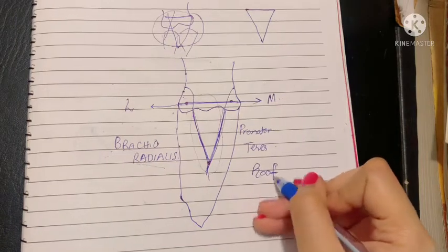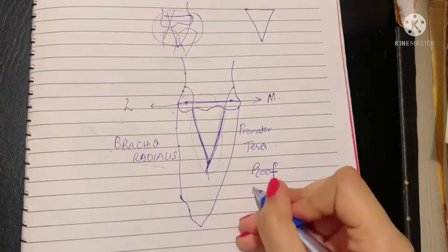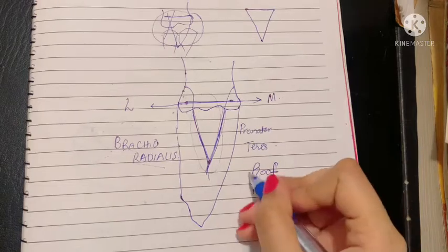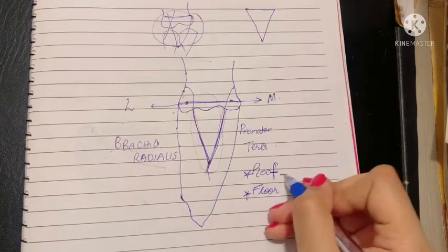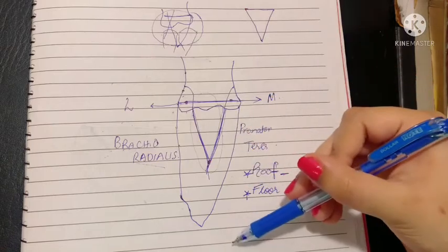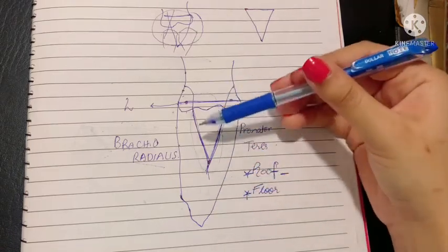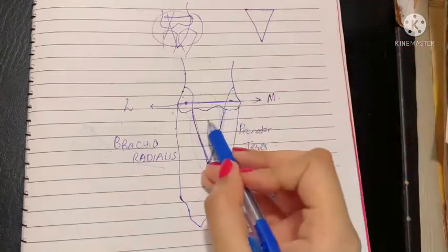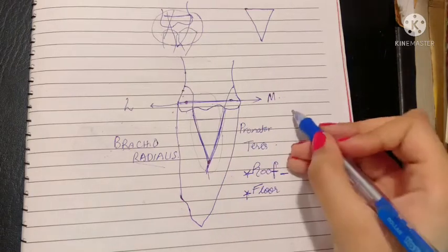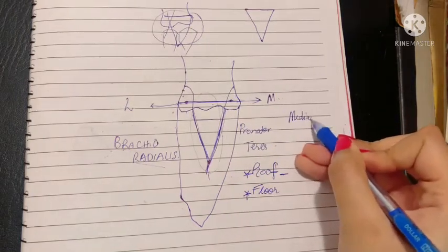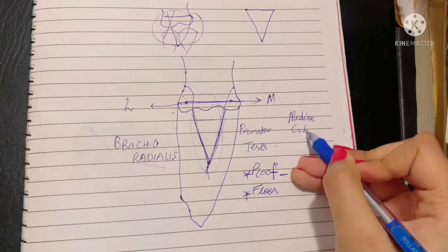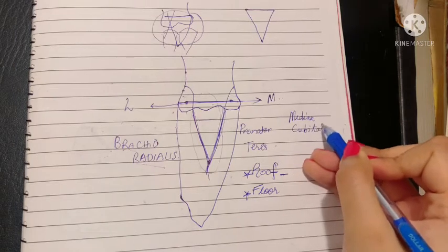The boundaries aren't over yet. There are two more important boundaries that people probably miss. Roof and floor are very important as well. The roof is formed by the skin, then the superficial fascia, which consists of the median cubital vein.